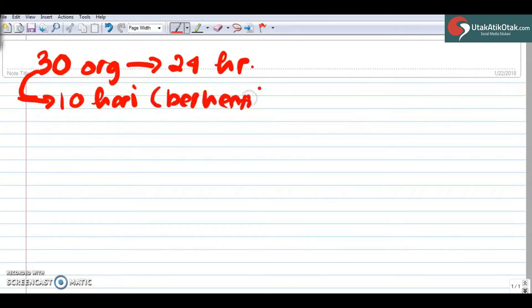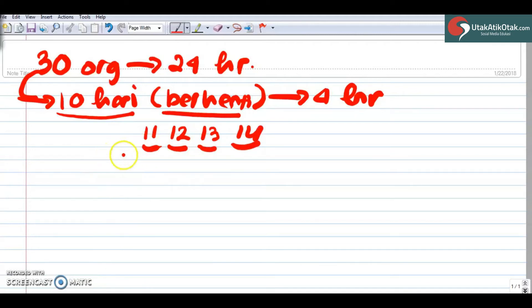Atau ada kejadian tertentu yang menyebabkan mereka berhenti selama 10 hari. Nah, setelah 10 hari ini baru berhenti selama 4 hari. Jadi ceritanya gini, 30 orang sebenarnya bisa selesai dalam 24 hari. Tapi ketika setelah hari ke-10, mereka berhenti. Jadi setelah hari ke-10, hari ke-11, 12, 13, 14, itu dia berhenti.